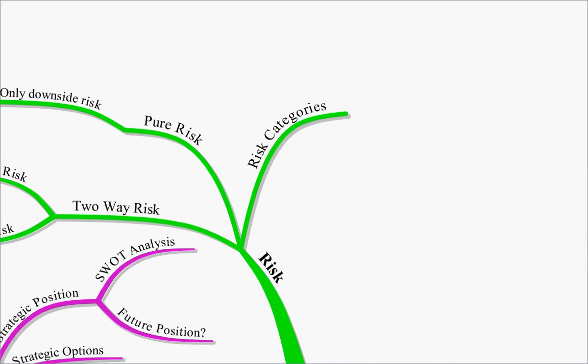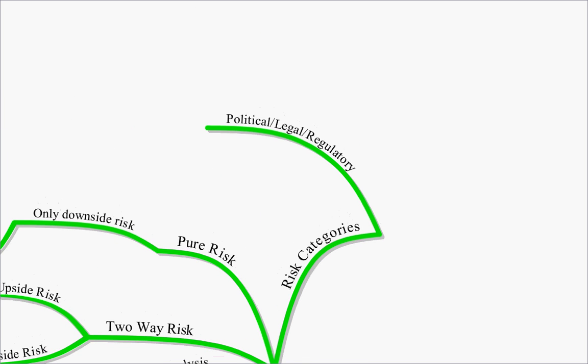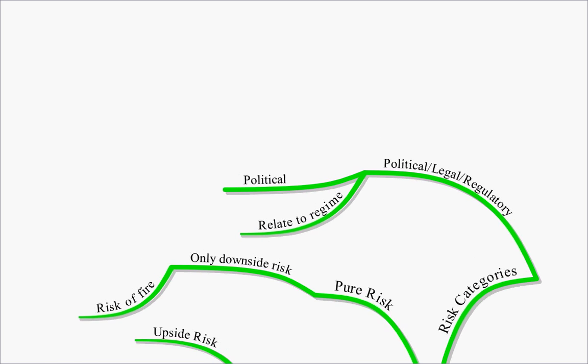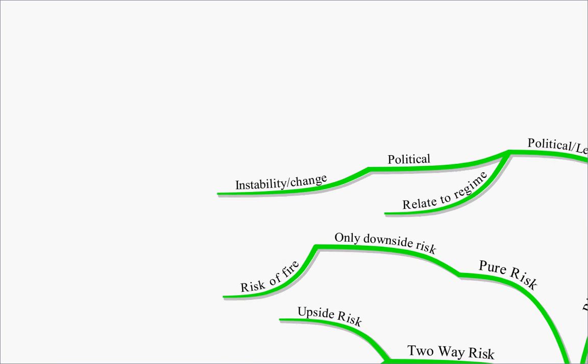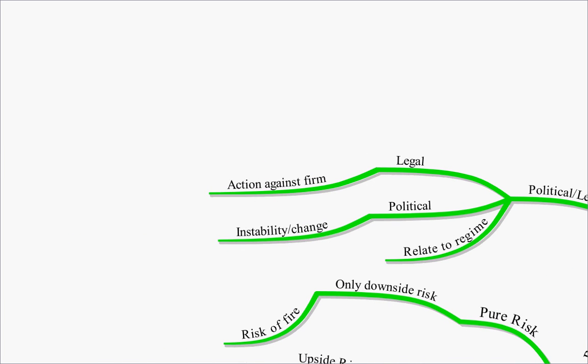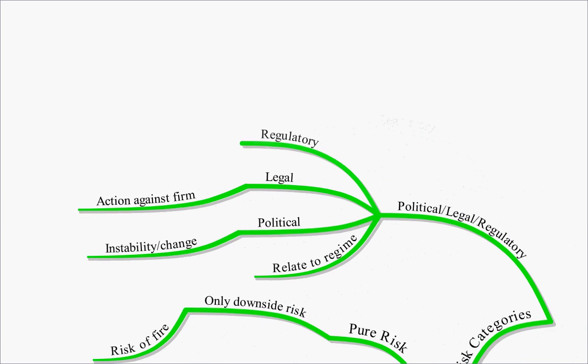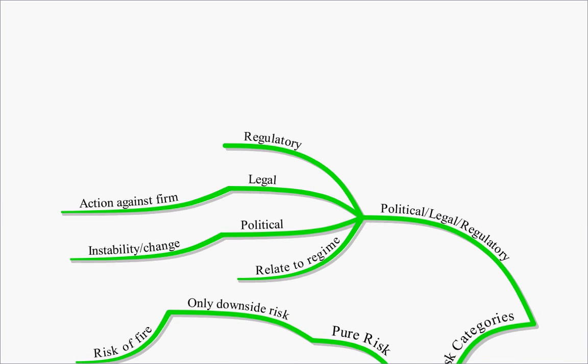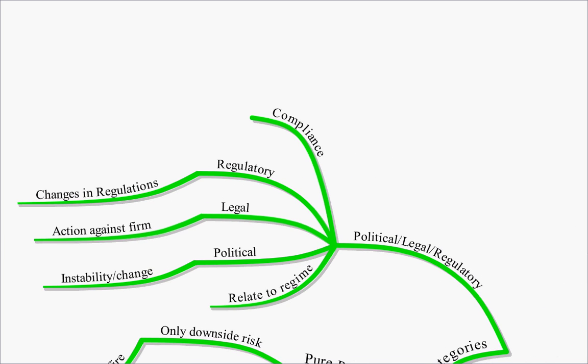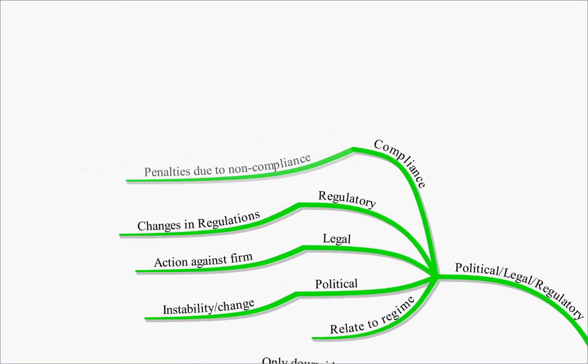We then went on to categorize our risks. First we looked at political, legal and regulatory risk. These all relate to the regime. So political risk is the risk of instability or change in the government. Legal risk is the risk that you're going to get some sort of action taken out against you. Regulatory risk is changes in regulations affecting the firm. And compliance risk is penalties due to non-compliance.